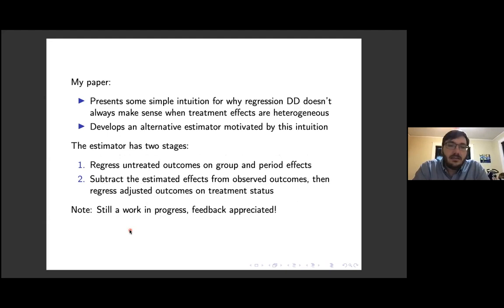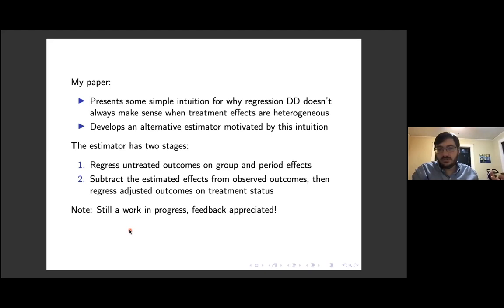That intuition led me to develop an alternative estimation approach, which I called two-stage differences-in-differences. In the first stage, you take untreated outcomes — outcomes for observations that are untreated — and regress those on group and period effects. In the second stage, you subtract those estimated group and period effects from observed outcomes and regress the differences on treatment status. That's basically the whole estimator.